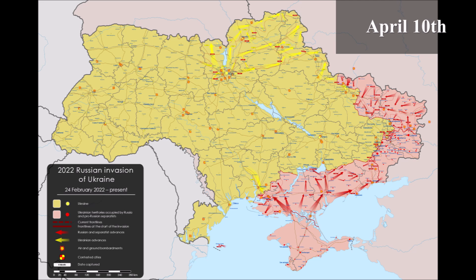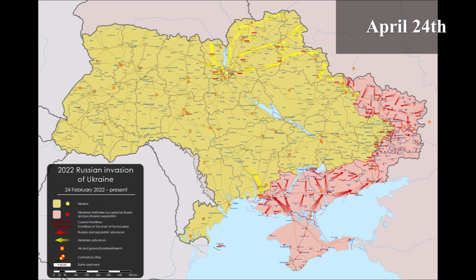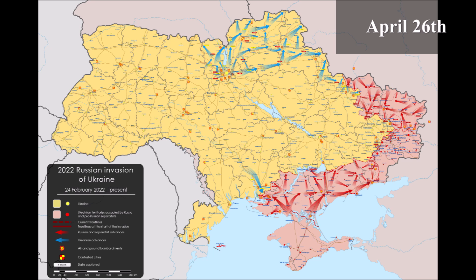The second phase covers the period from April 8, 2022, when the area of heavy fighting shifted to the south and east of Ukraine, to August 28, 2022, the day before Ukraine announced the start of its Kherson counteroffensive.